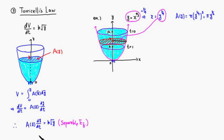So plug this into Torricelli's equation. We have pi y to the three-halves power dy/dt, which is equal to k times the square root of y.